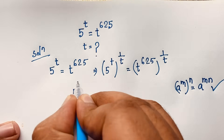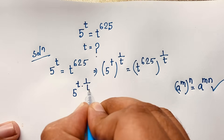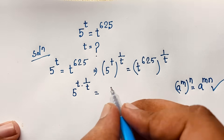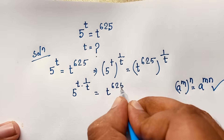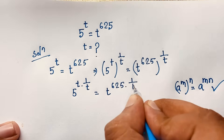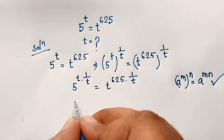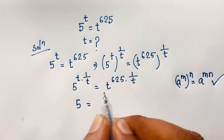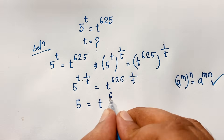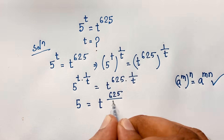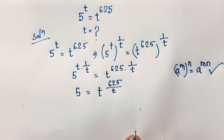According to this formula, I can simplify this expression. It will be 5 to the power t times 1 over t, equal to t to the power 625 times 1 over t. The t's cancel, and we find: 5 is equal to t to the power 625 over t.